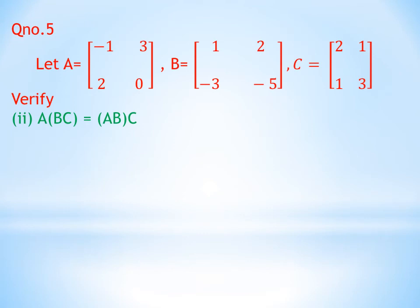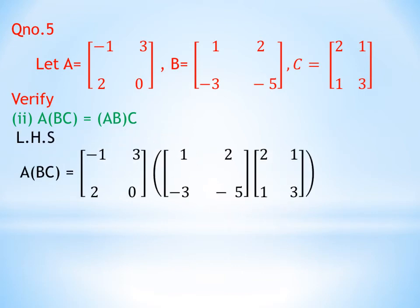Question number five has three matrices: A with elements -1, 3, 2, 0; B with elements 1, 2, -3, -5; and C with elements 2, 1, 1, 3. We have to verify that A(BC) = (AB)C. Taking the left-hand side, we write A into (BC), so matrices B and C are multiplied first. Matrix A is written as it is while we compute BC.